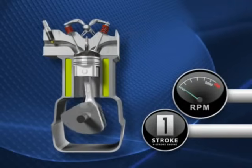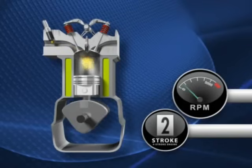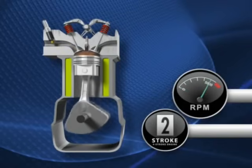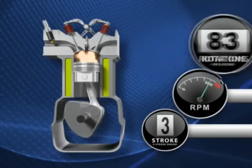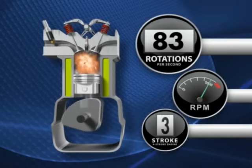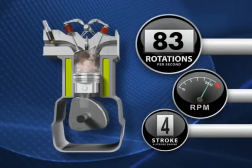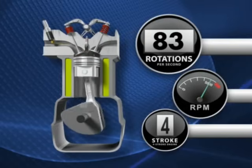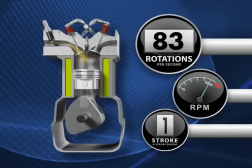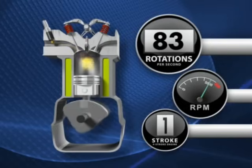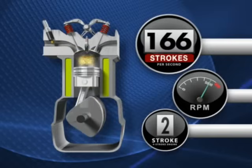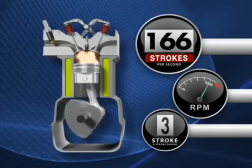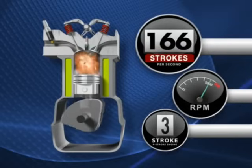At wide open throttle, the crankshaft may turn at 5,000 RPMs — a dizzying 83 times per second. Meanwhile, the piston traveled up and down 166 times in that same second.